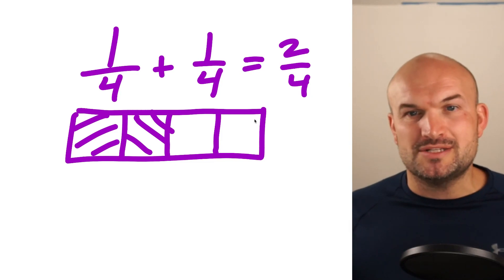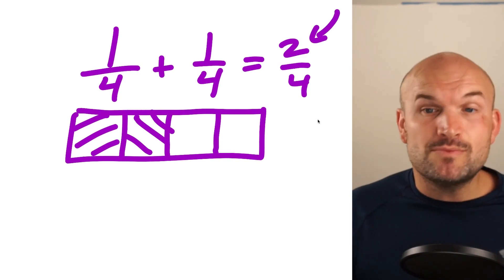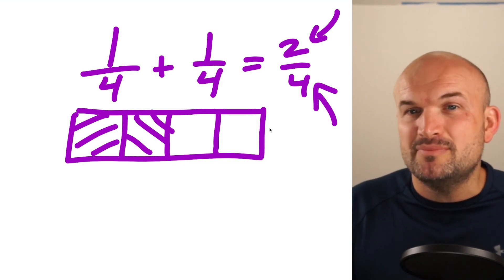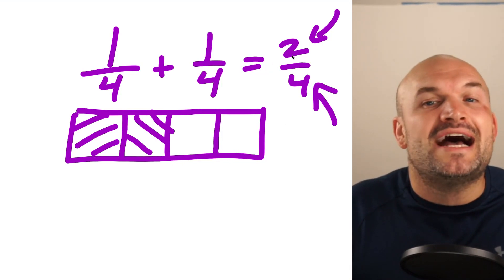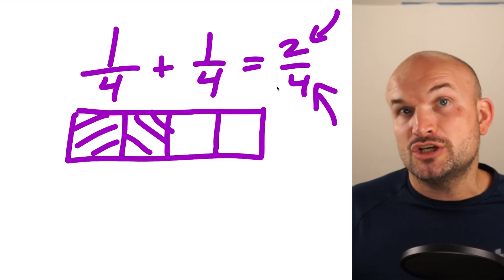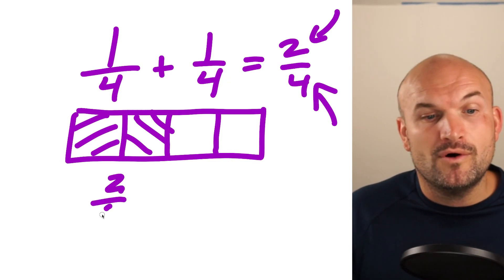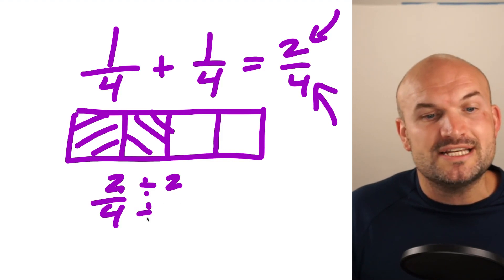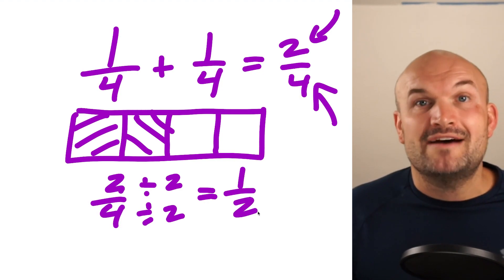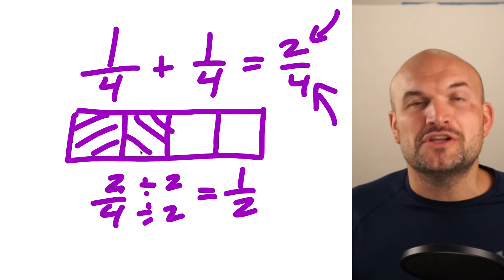The next thing we always like to do is simplify the fraction — we like to have it in reduced terms in the numerator as well as the denominator. When we get our answer and want to see if it can be simplified further, we look for numbers that can evenly divide into both the numerator and the denominator. That reduces our fraction to lowest terms. Two divided by four — they can both be divided by two — and that gives us a final answer of one-half. So one-fourth plus one-fourth equals one-half, and you can also see that visually represented.